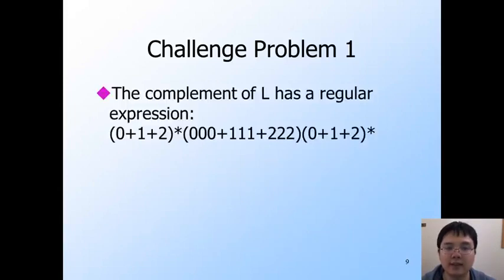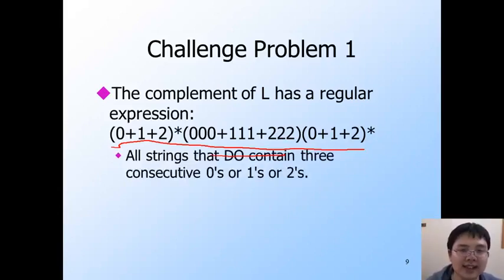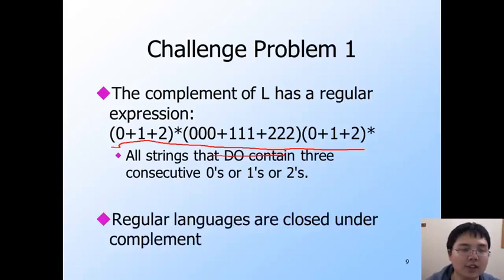Firstly, we can prove that the complement of L has a regular expression, which is in this form. We have three consecutive zeros, or ones, or twos, with any number of zeros, ones, and twos before and after. This regular expression exactly defines all strings that do contain three consecutive zeros, ones, or twos. Additionally, we have the nice property that regular languages are closed under complement. So it follows that L, the complement of the language of this regular expression, is regular.